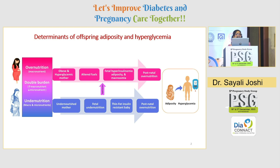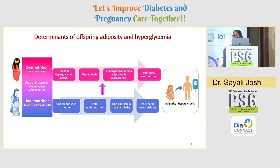On the other hand, an overnourished mother has excess macronutrients and becomes obese and hyperglycemic. This results in excessive transfer of maternal fuels to the growing fetus, including glucose, amino acids, and lipids, leading to fetal hyperinsulinemia. The offspring is born with macrosomia and adiposity, increasing the risk for later-life obesity and hyperglycemia. Rapid nutritional transition shifts the balance from undernutrition to overnutrition, escalating the burden of adiposity and hyperglycemia.